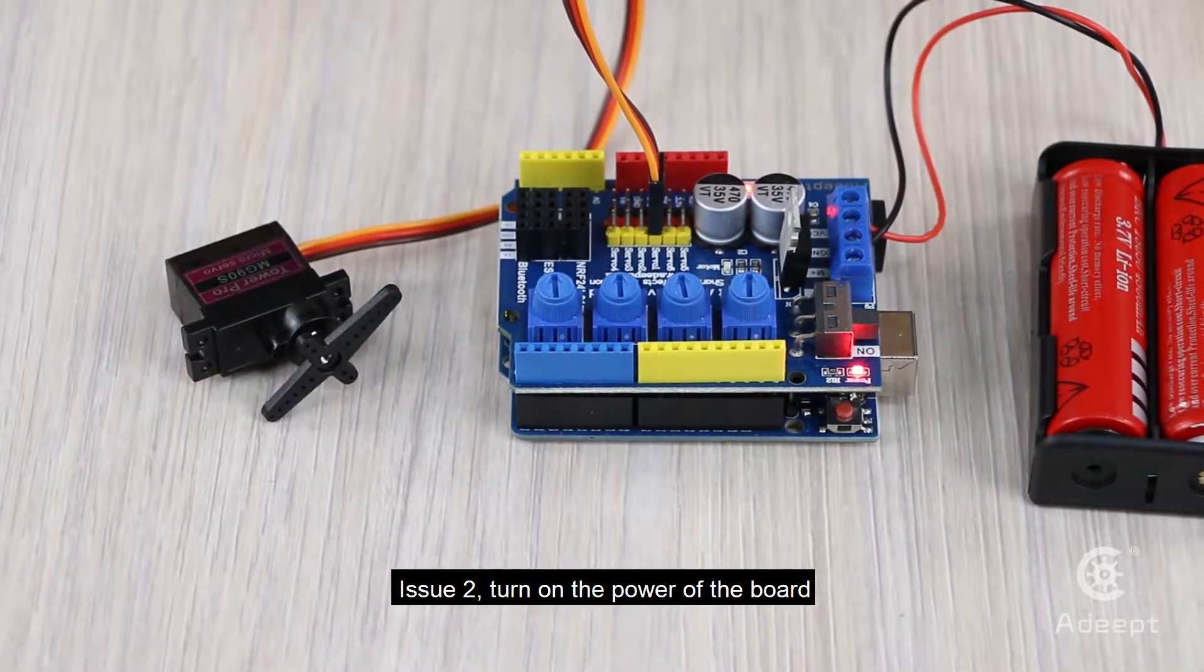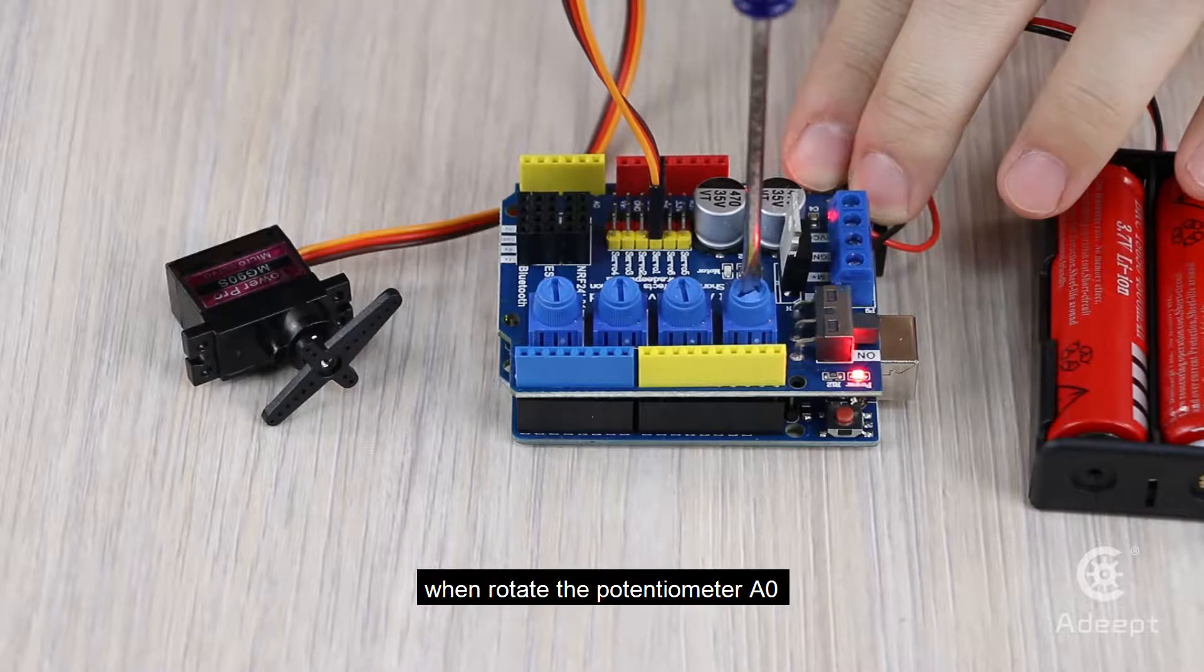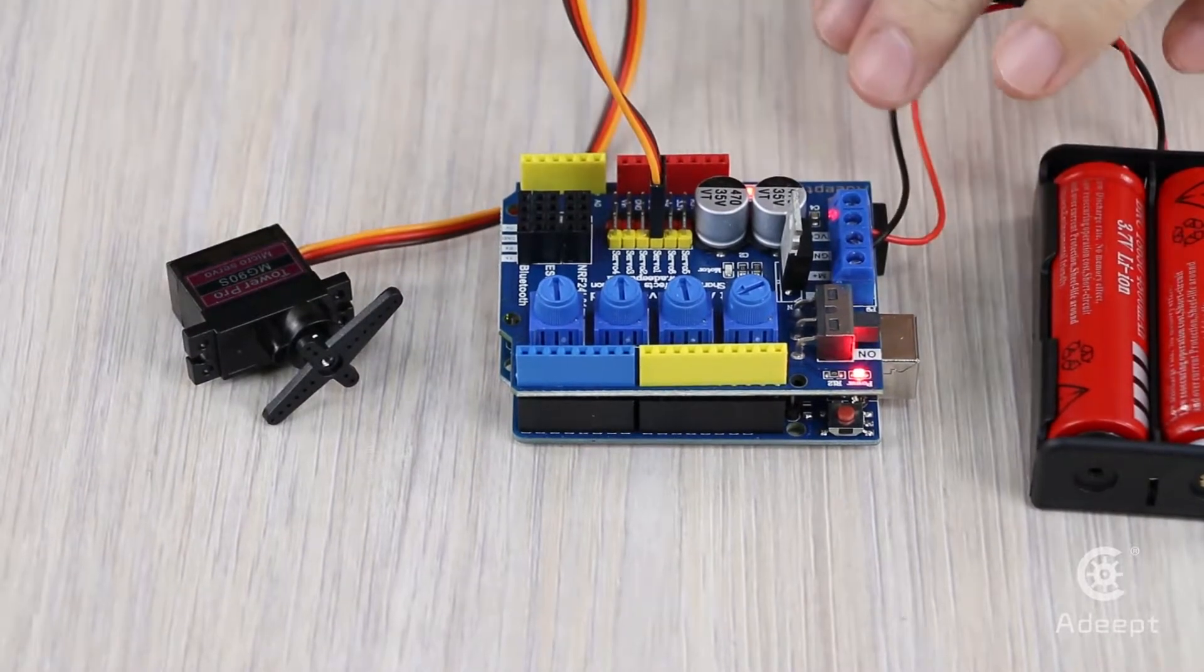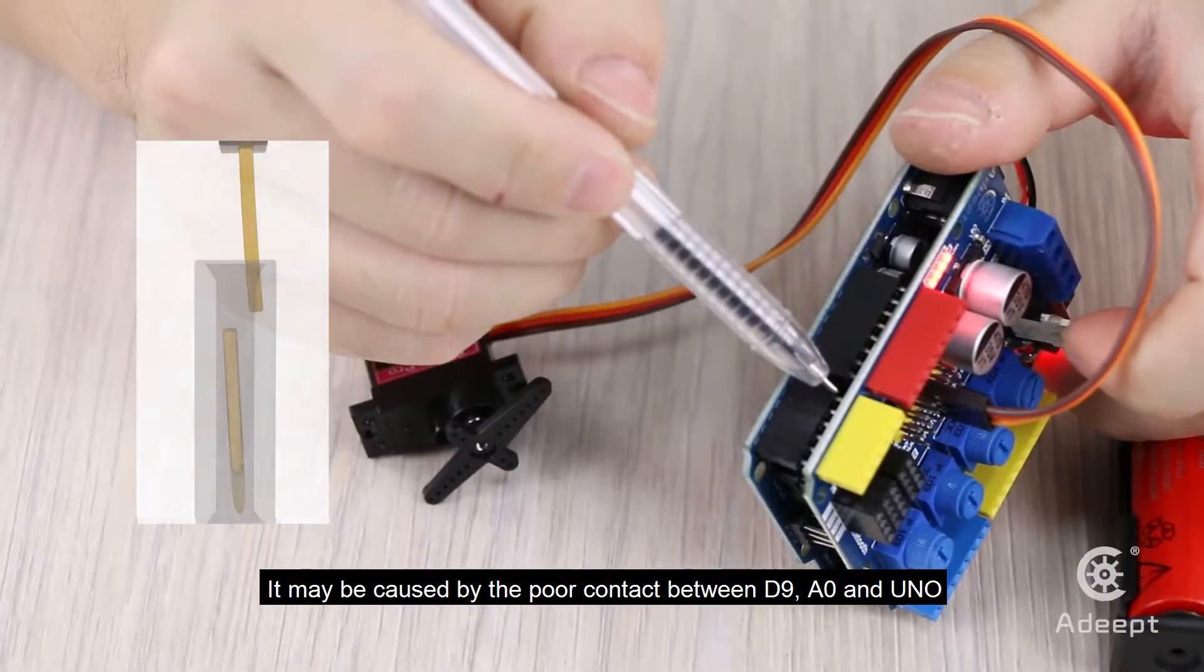Issue 2: Turn on the power of the board. When you rotate the potentiometer A0, servo one doesn't respond. It may be caused by poor contact between D9, A0, and the UNO.